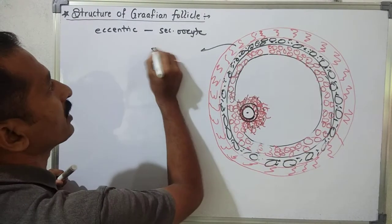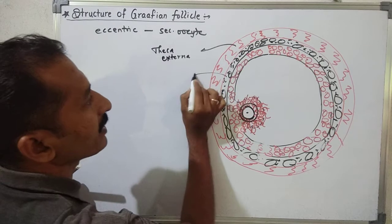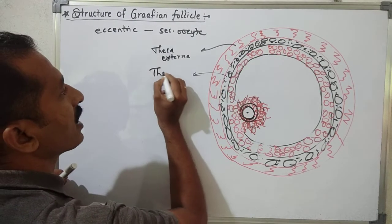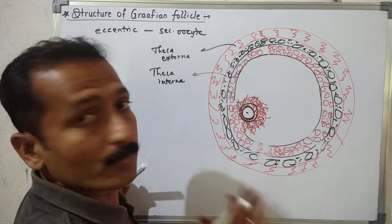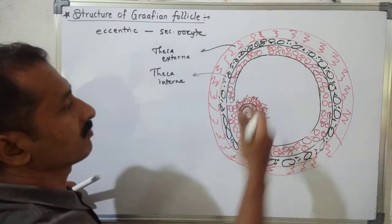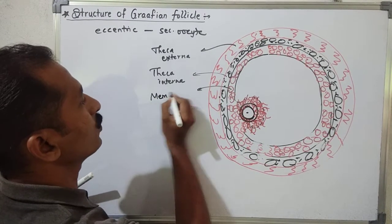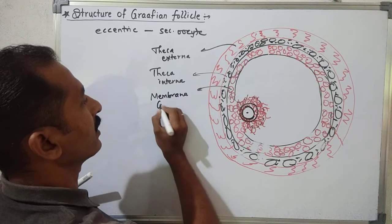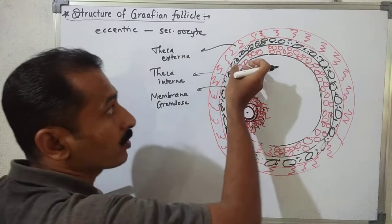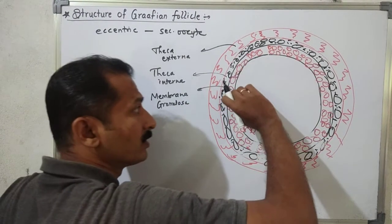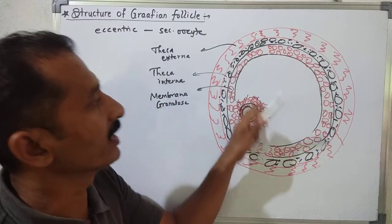To summarize the layers from outside to inside: the outer layer is theca externa, then theca interna, then membrana granulosa. Some cells of the membrana granulosa form the surrounding over the secondary oocyte in an eccentric position.